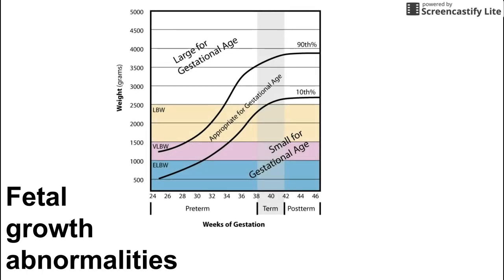Let's start off with this chart here that shows gestational age and appropriate sizes by gestational age. We see across that bottom x-axis the weeks of gestation as well as the weight of the fetus or baby. Before the baby is delivered, that weight is an estimated fetal weight based on size usually obtained from ultrasound. It's usually pretty accurate and a good assessment of whether the baby is too big or too small for gestational age.